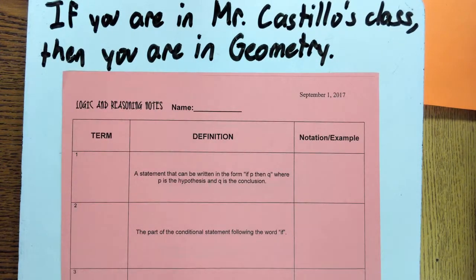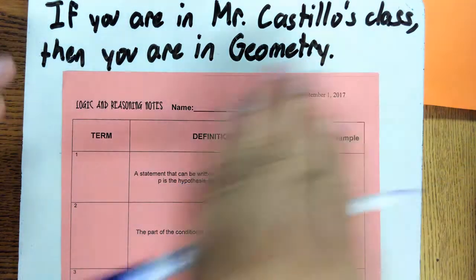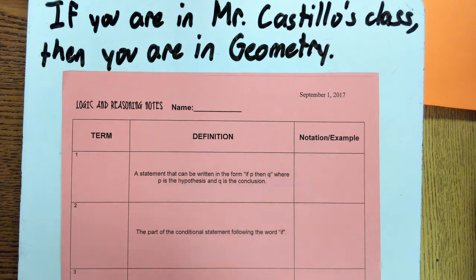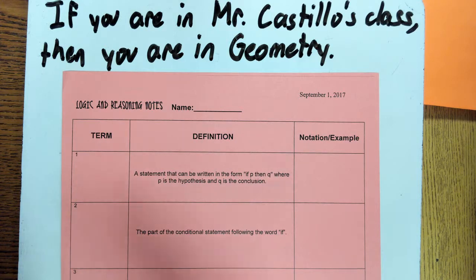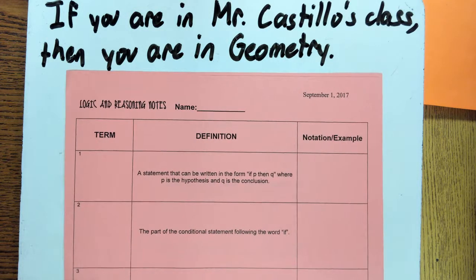Today we are covering conditional statements. A conditional statement is an if-then statement. For example, if this happens, then this happens. It shows you a series of steps. We use conditional statements in geometry in proofs. When we are trying to prove things, we want to say, if we have this, then what has to follow? So, let's get started.